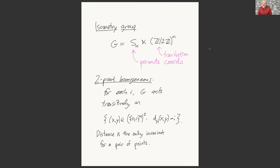This group acts transitively on the binary Hamming space — you can get from any vector to any other vector using just translations. The importance of the permutation part is that this is a two-point homogeneous space: for each distance i, G acts transitively on pairs of points at distance i. In other words, distance is the only invariant for a pair of points. The only question for whether one pair can be transformed into another is: are they at the same Hamming distance?